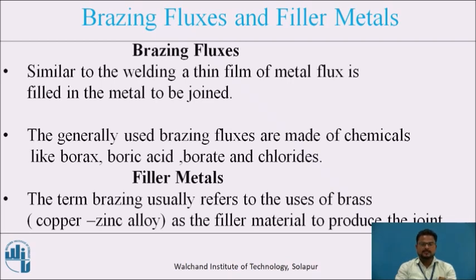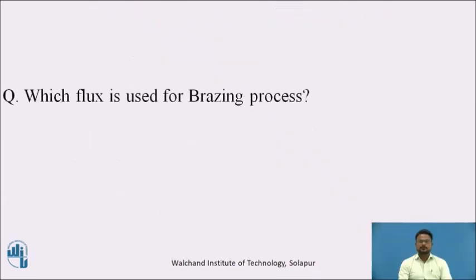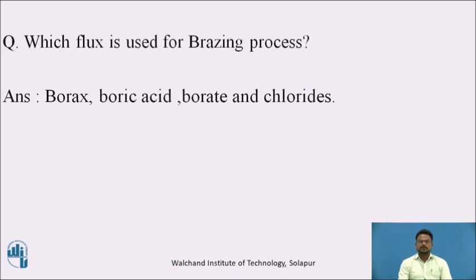The term brazing usually refers to the use of brass, a copper and zinc alloy, as filler material to produce joints. Brass with various compositions is widely used to produce ductile joints in steels, which is the most common commercial application. Brass used as filler material generally contains less than 60% copper. Certain alloying elements like silicon, silver, nickel, and magnesium are added to the brass to attain desirable properties in the joints. The flux used for brazing process is boric acid, borate, and chlorides.